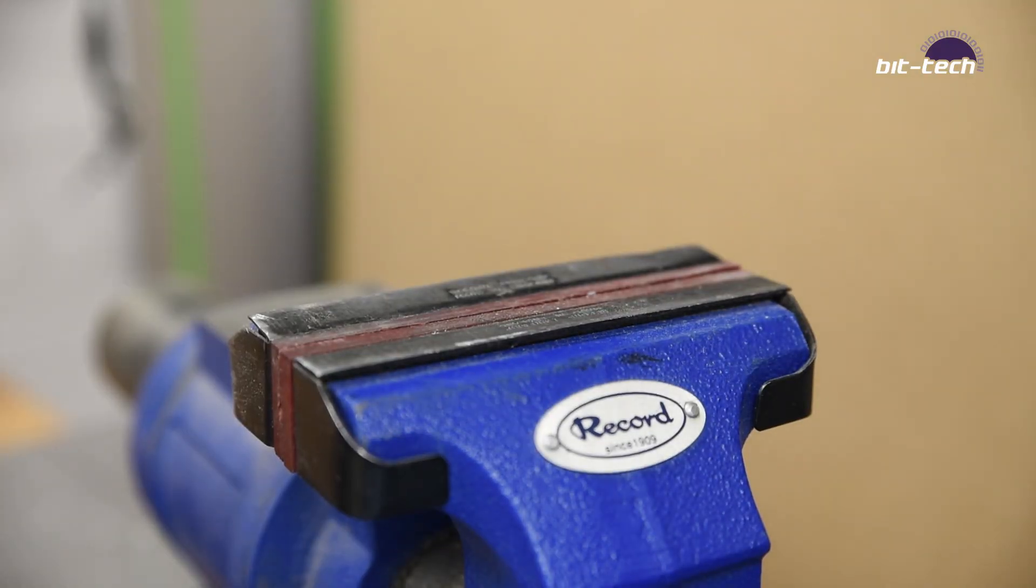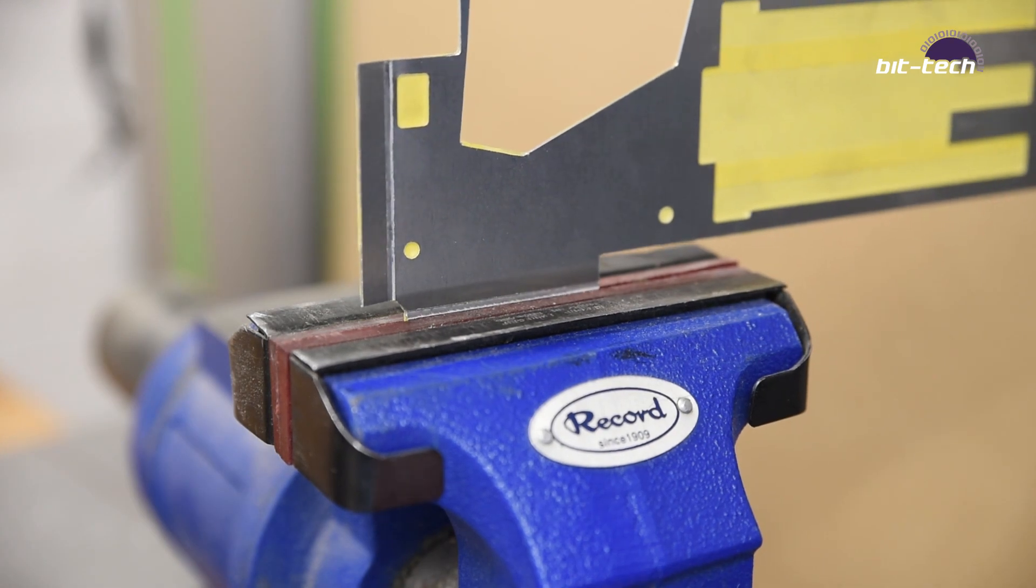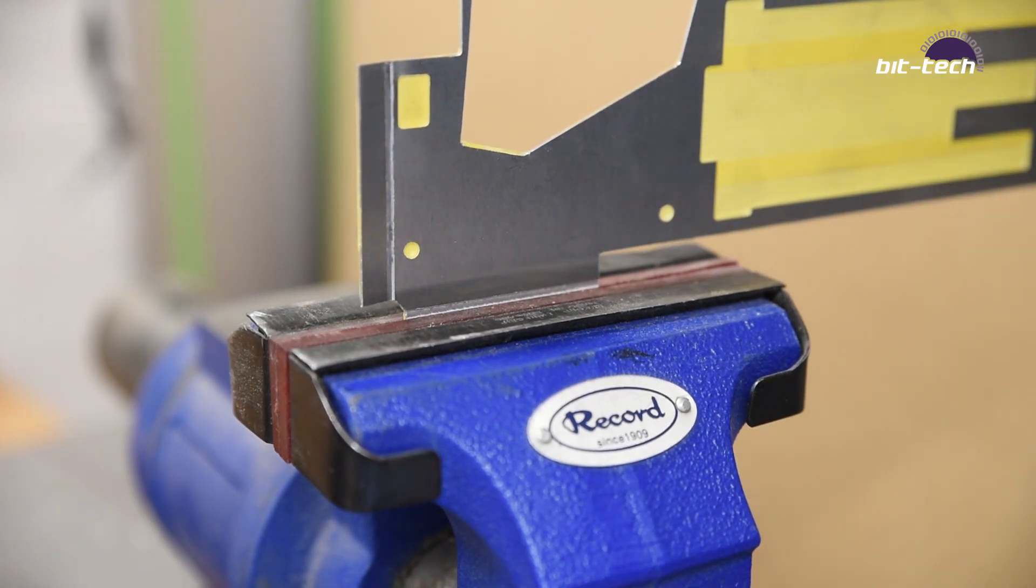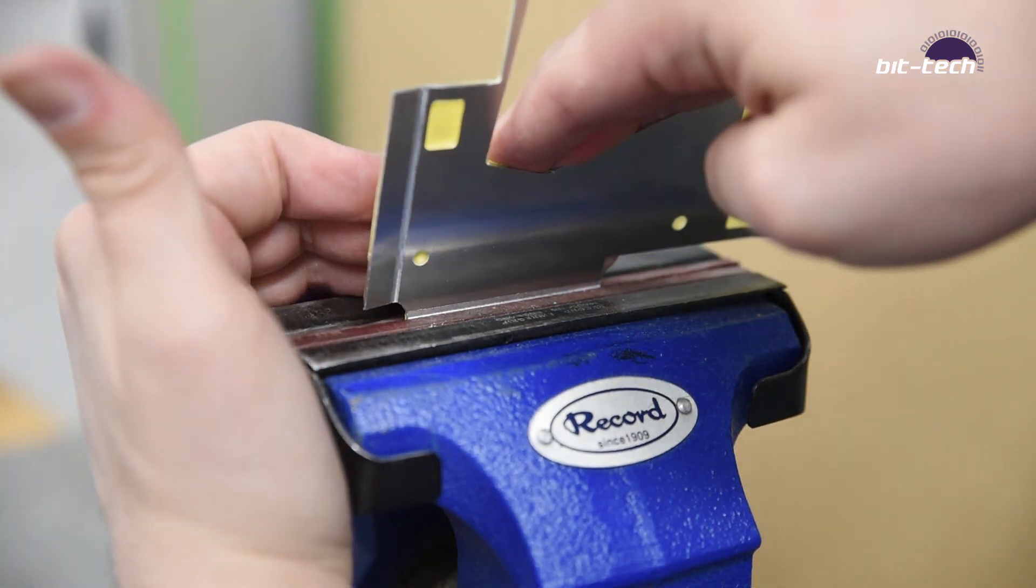A vice really helps for bending pieces like this, but some straight pieces of wood clamped to a solid table actually works very well. I use that method for pieces that are too long to do in the vice. Alternatively, do what I should have done and get a metal press brake.